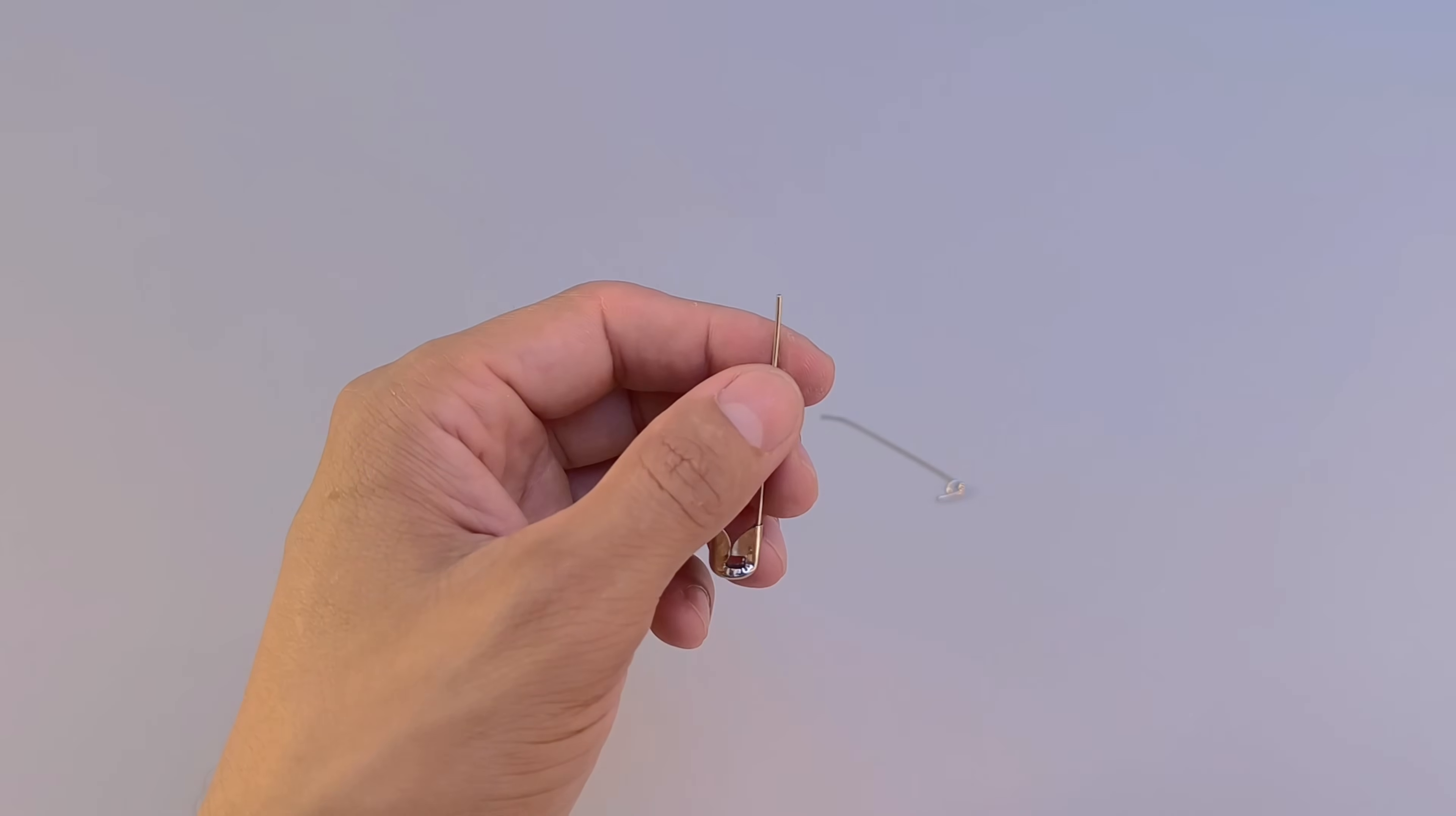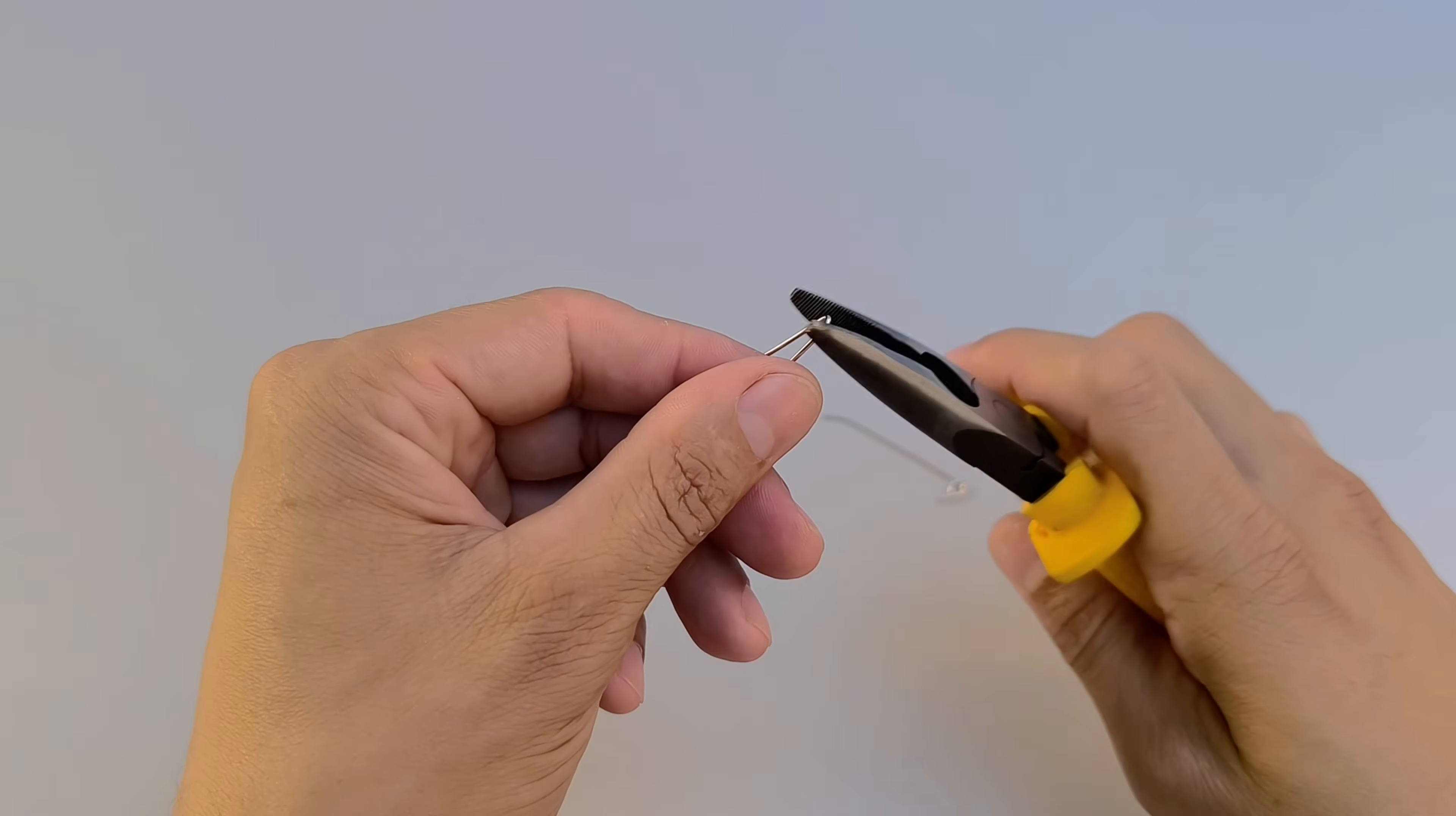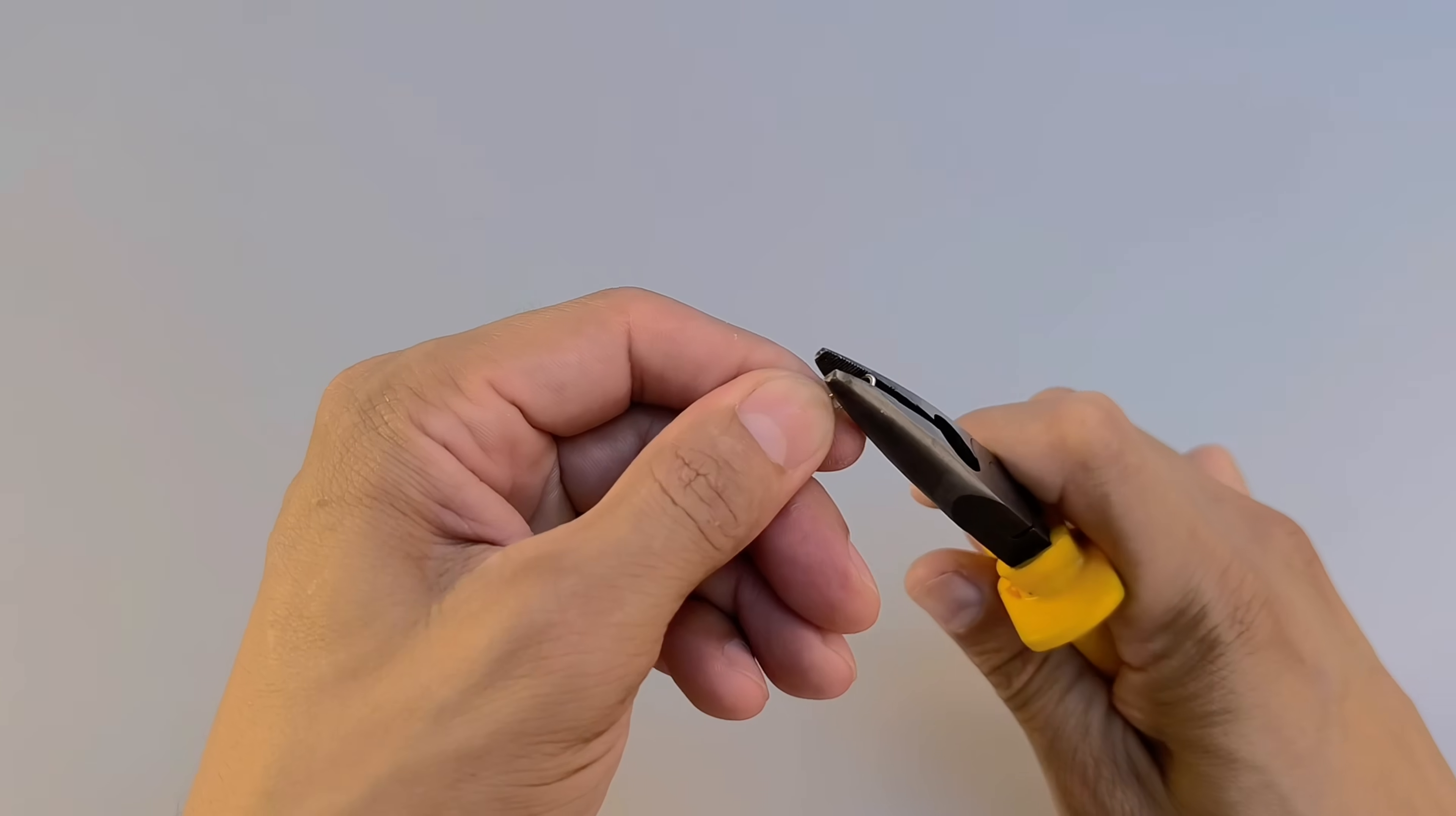Now go back to the piece of spring pin that you set aside. Bend one end of the metal into an L shape, then make another bend parallel to the first, creating a small hook.